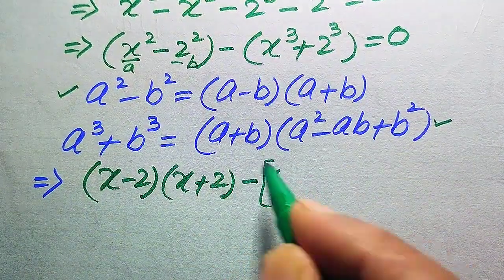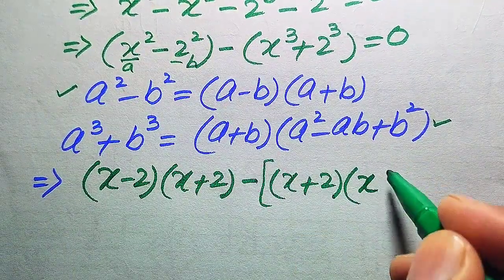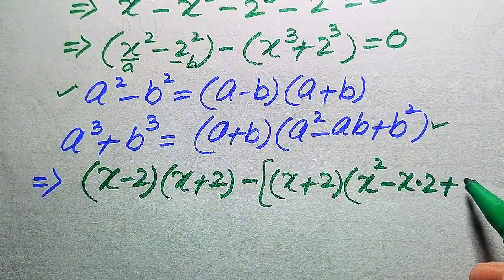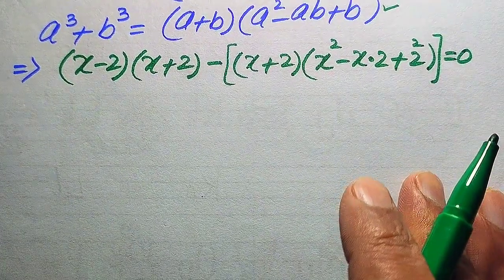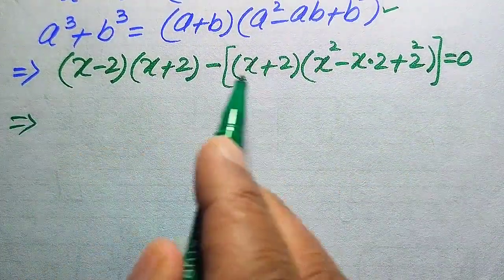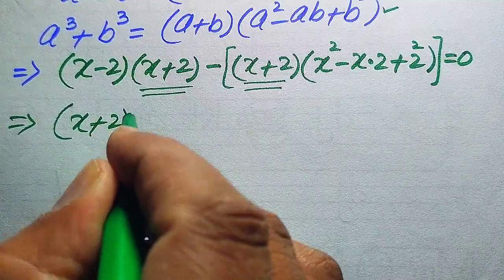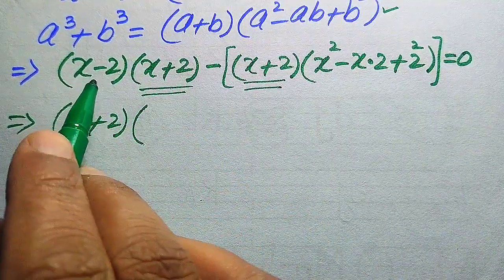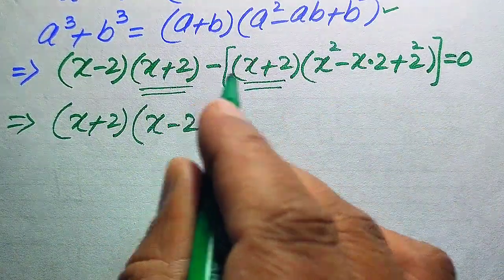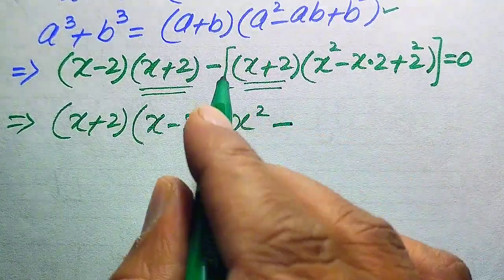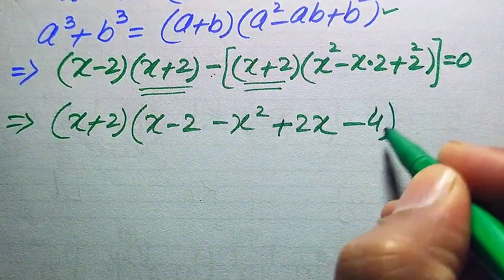Applying the sum of cubes formula to X cubed plus 2 cubed gives (X plus 2)(X squared minus 2X plus 4). So the full equation becomes: (X minus 2)(X plus 2) minus (X plus 2)(X squared minus 2X plus 4) equals 0. Distributing the negative sign into the second factor gives minus X squared, plus 2X, minus 4.